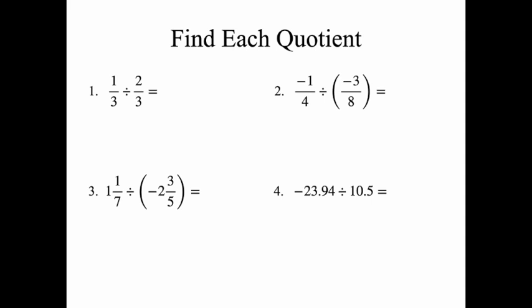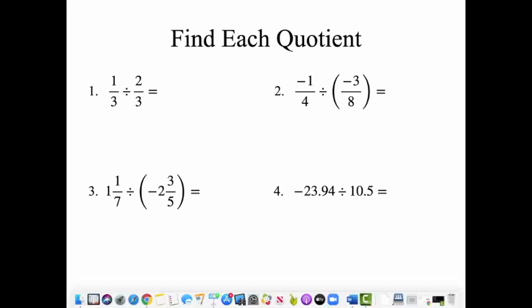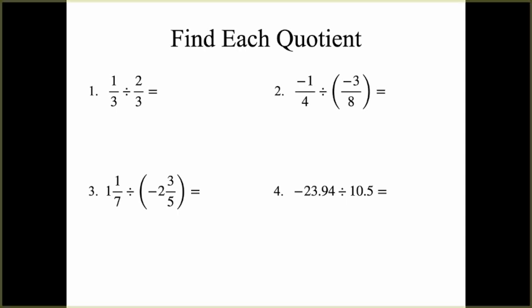Here are four problems to find the quotient. For number 1, we have 1 third divided by 2 thirds. When dividing by a fraction, we multiply by the reciprocal, so we have 1 third times 3 halves. We can cancel the 3s, and we get 1 half.